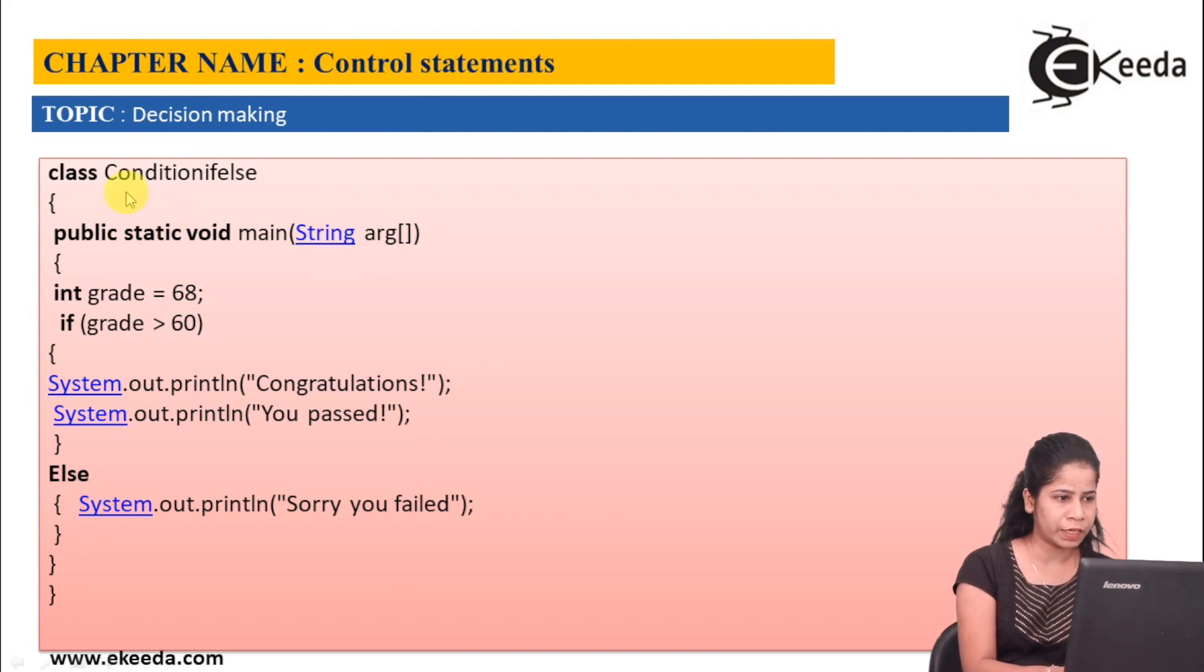So here I am having class ConditionIfElse and I am having main method. Here I am having a grade variable, which is having value 68 integer. So here I am having if statement, which is having condition that if my grade is greater than 60,